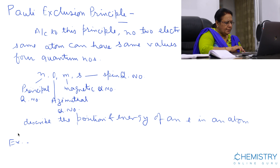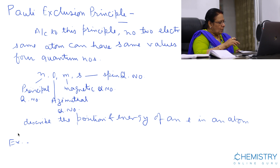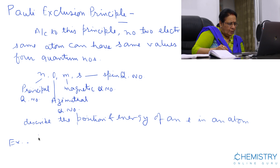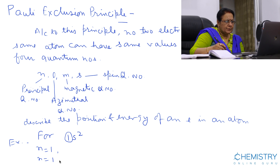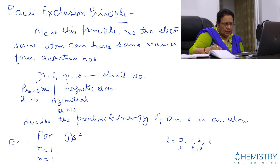Now, the first example is for 1s². The 1 indicates the value of the principal quantum number N, which is 1 for both electrons. The electrons are present in the S subshell. The value of L is 0 for S subshell, 1 for P subshell, 2 for D subshell, and 3 for F subshell. So the value of L is 0 for both electrons.